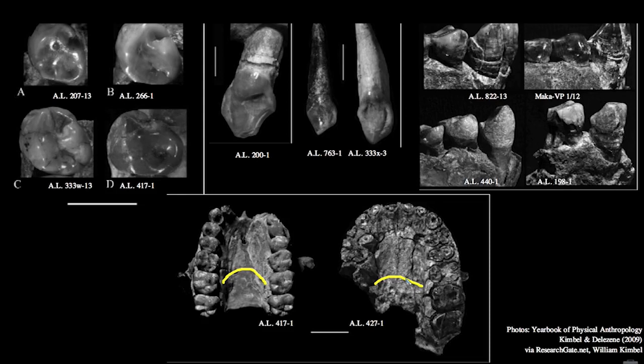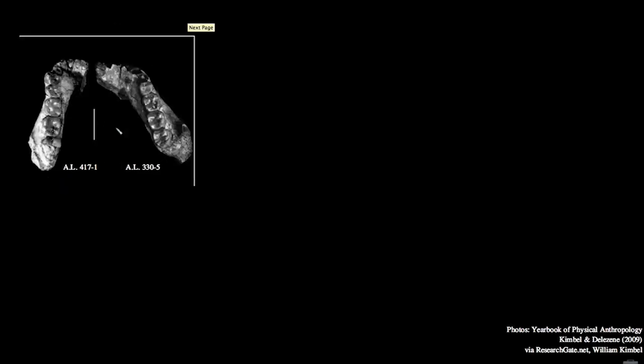Moving ahead, we can look at mandibles from Hadar. On the left is AL417-1 and on the right AL330-5. You can see differences in the overall shape of the dental arcade. The one on the left appears much more primitive, like the U-shaped dental arcades we're used to seeing in primate dentition. The one on the right is beginning to show evidence of a more parabolic shape, like we're used to seeing in human dentition. So again, we have variability with both more primitive and more derived individuals.